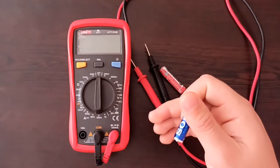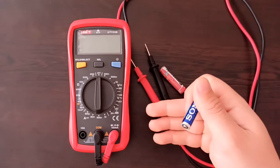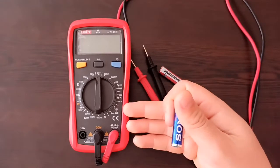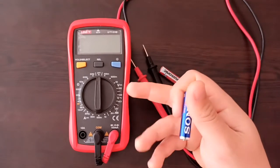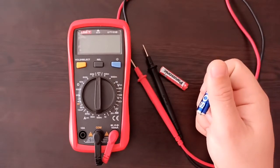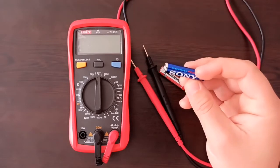This multimeter has a battery tester option up to 9 volts where it indicates on the display if the battery is good or not. If your multimeter doesn't have that option, you can measure it just with the DC voltage setting.